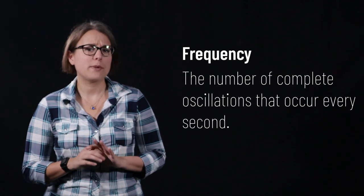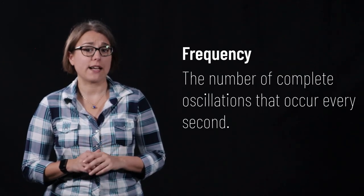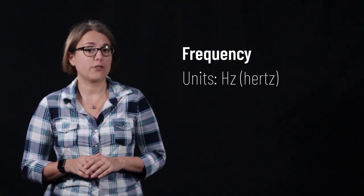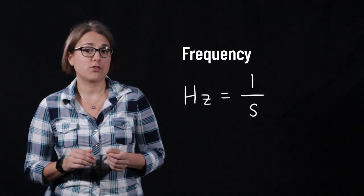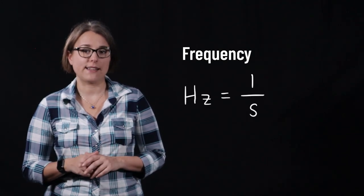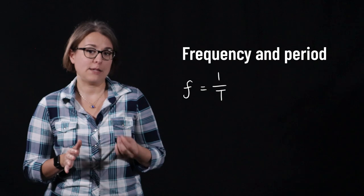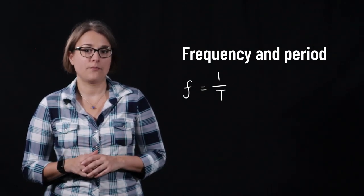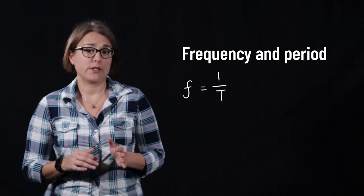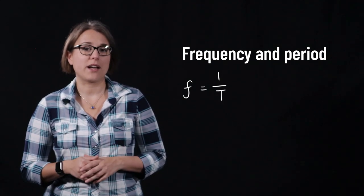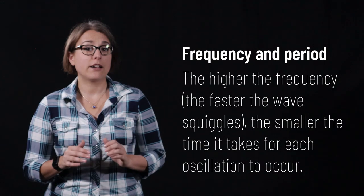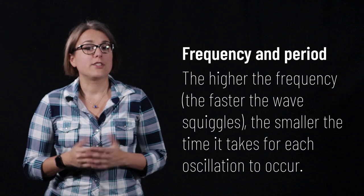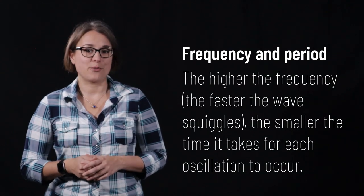Frequency tells us how many oscillations occur per second in a wave. Frequency has a symbol of lowercase f and has units of hertz. One hertz is equal to one divided by a second. Frequency and period are related by the equation f equals one divided by T. The higher the frequency of oscillation, the faster it makes its squiggles, and the smaller the amount of time each period will be.